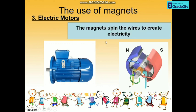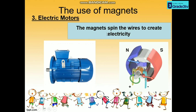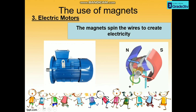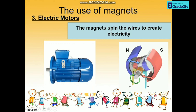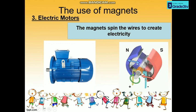The magnet spins the wire to create electricity. This is the magnet — north pole and south pole. So the magnet spins the wires to create electricity.